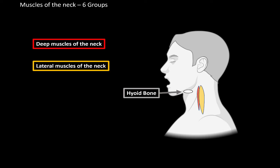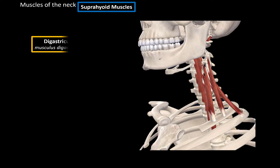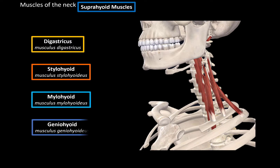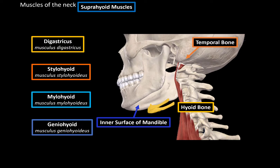Now let's add the hyoid bone and cover the suprahyoid muscles — the muscles located above the hyoid bone. These are the digastric, stylohyoid, mylohyoid, and geniohyoid muscles. These muscles are primarily going to attach to either the inner surface of the mandible or the temporal bone, and from there they attach to the hyoid bone. All of them share a common function: to fixate the hyoid bone in place by pulling it from all sides.